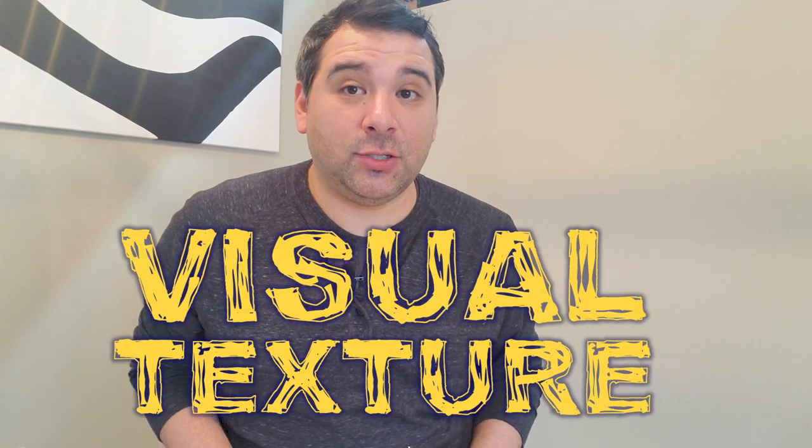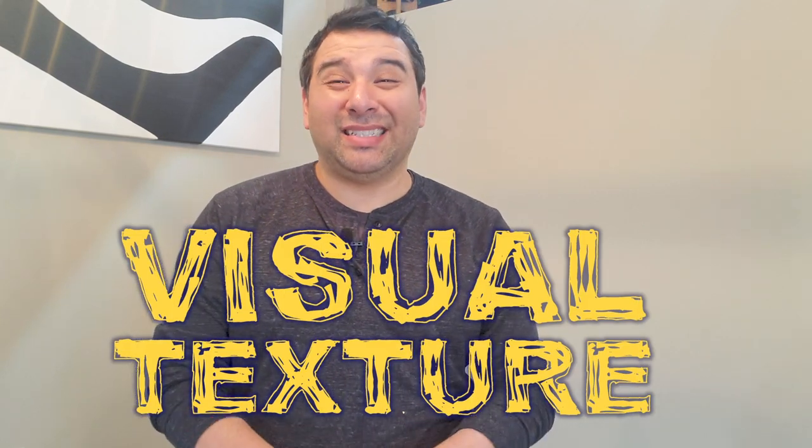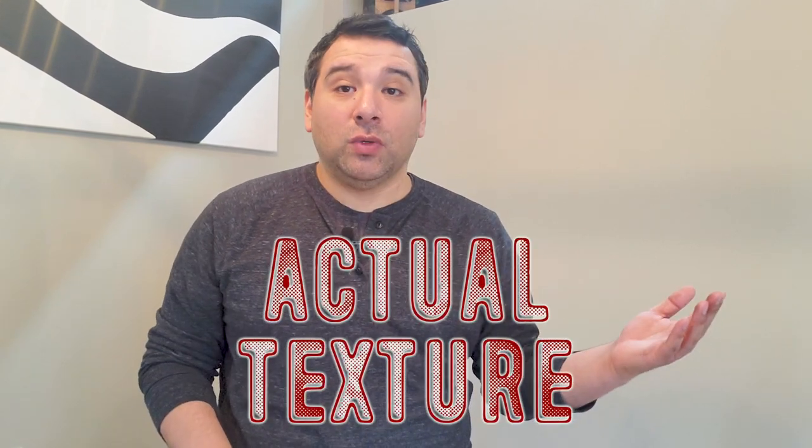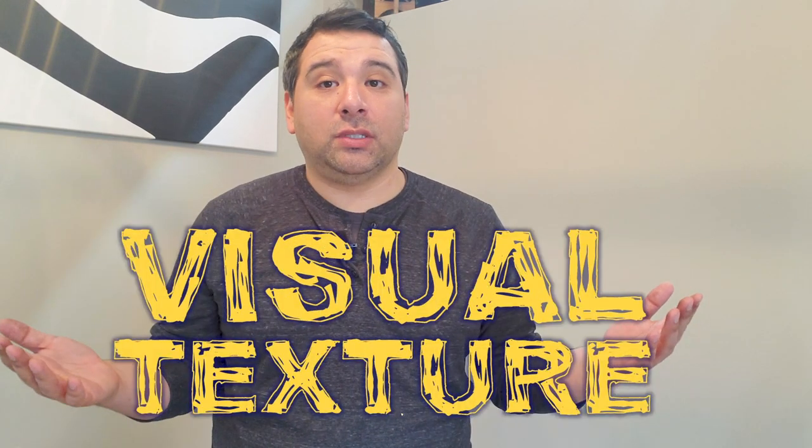The second form of texture is visual texture. It is the stuff that we can see but not feel. That's what we're going to be making today. We're going to be turning actual texture into visual texture.